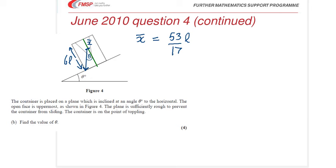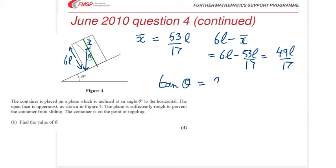We need, first of all, to work out 6L minus x bar. And that works out to be 6L minus 53L over 17. That's 49L over 17. Now, tan theta, then, is 2L, which is this length here, divided by 49L over 17, then. So that's 34 over 49, and that gives us theta equals 34.8 degrees.